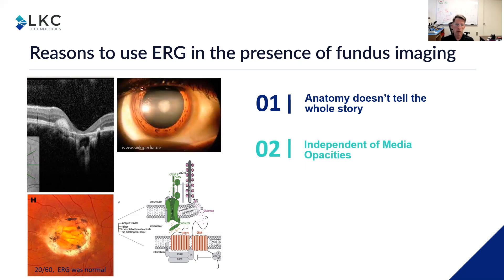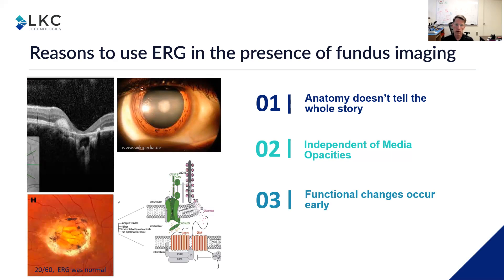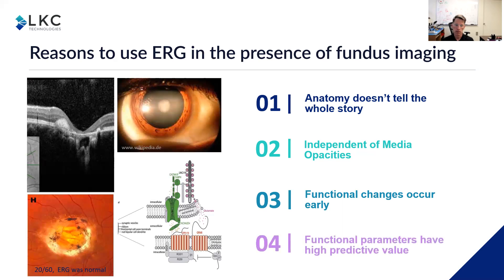Another issue with imaging techniques is cataracts. If you have a cataract, you can't see through it — the OCT doesn't work, the fundus photography doesn't work — whereas the ERG is largely independent of media opacities if you pick the right ERG technique. You can also have functional changes that occur much earlier than seen in structural tests; there are publications showing changes in ERG five years before seeing retinal nerve fiber layer thickness changes in glaucoma subjects. Another reason to use it is that functional parameters have high predictive value, together or alone from fundus imaging. In diabetic retinopathy, papers have shown that the ERG alone is the most predictive parameter for who's going to need intraocular surgery.